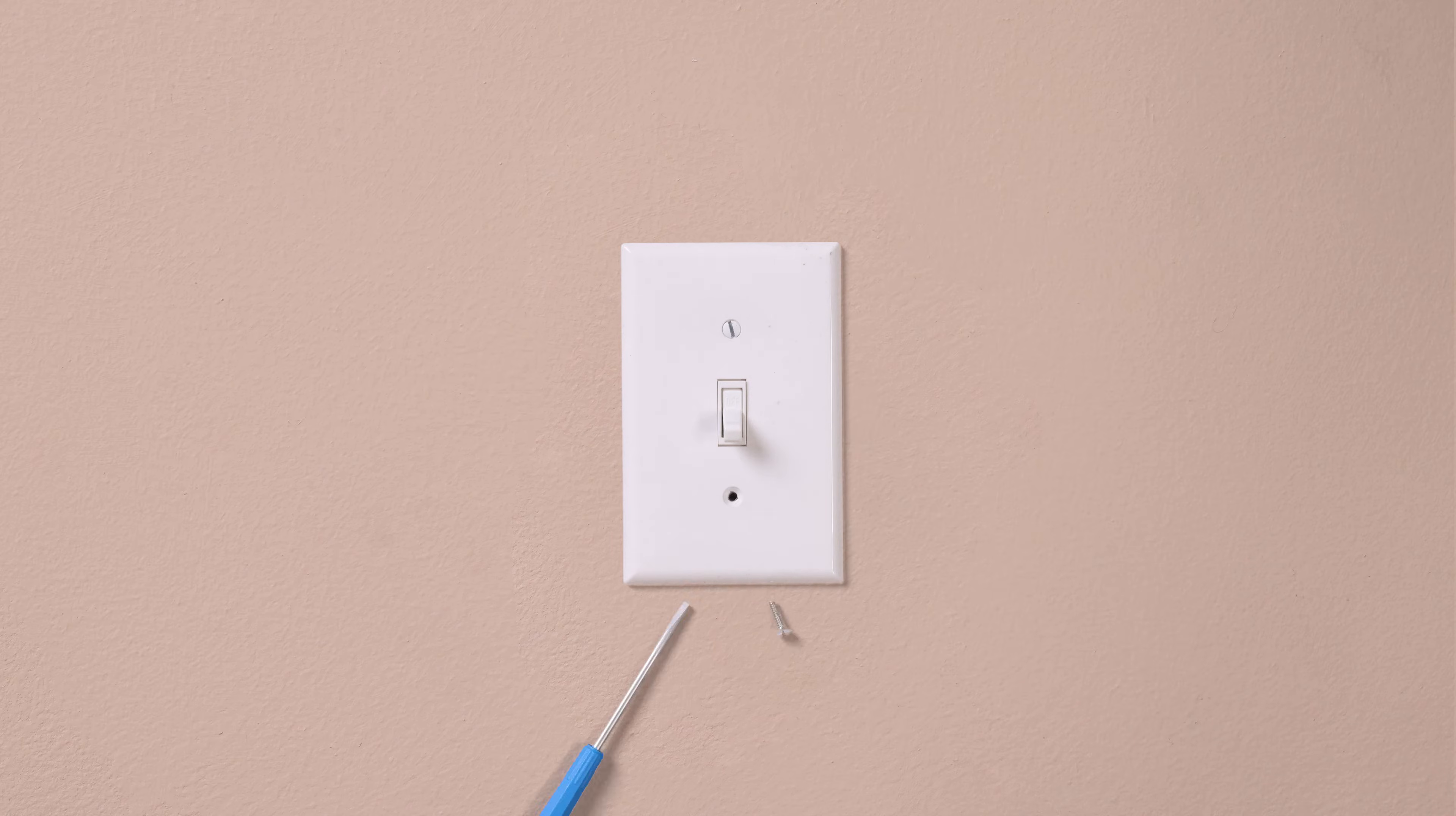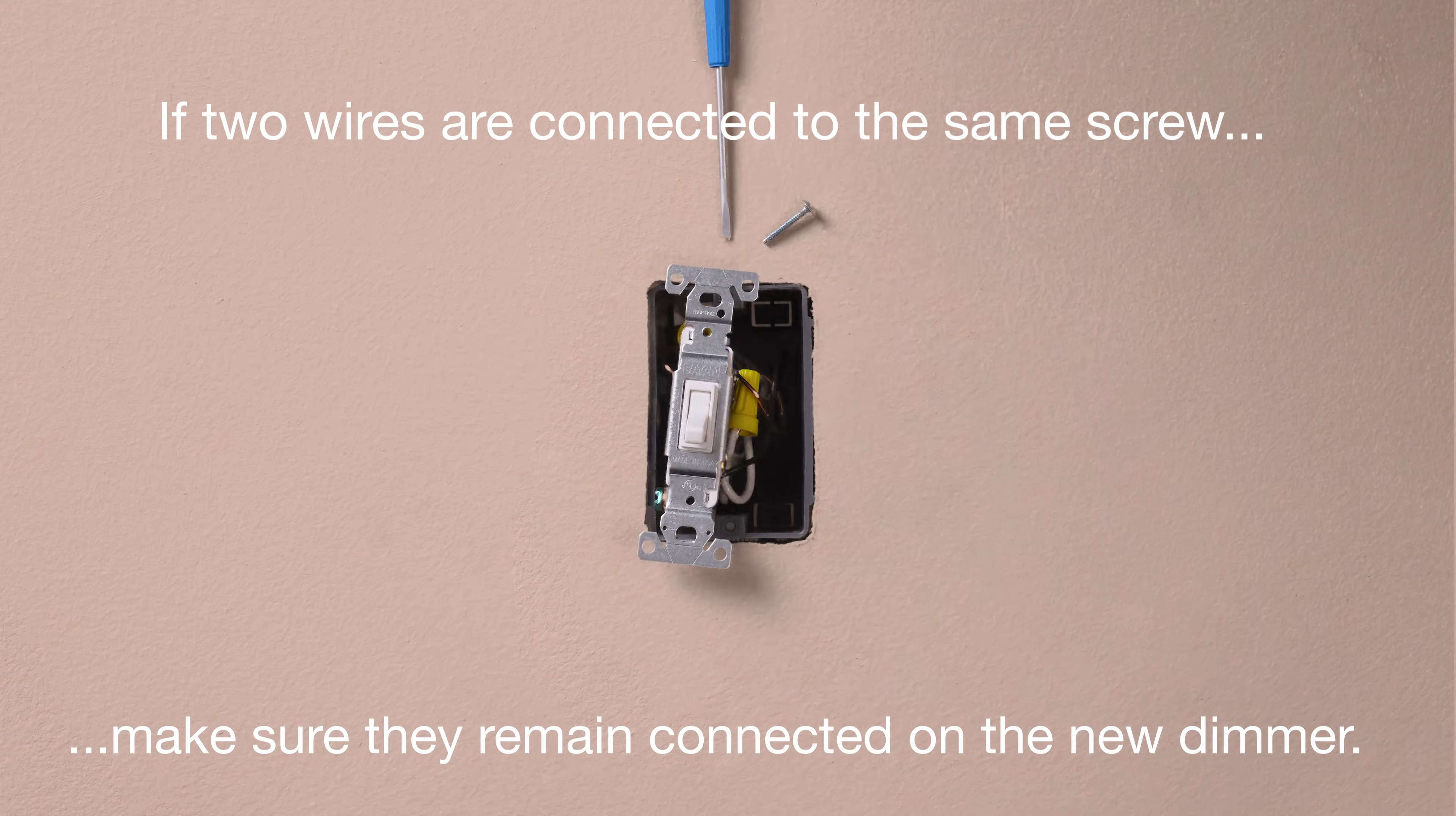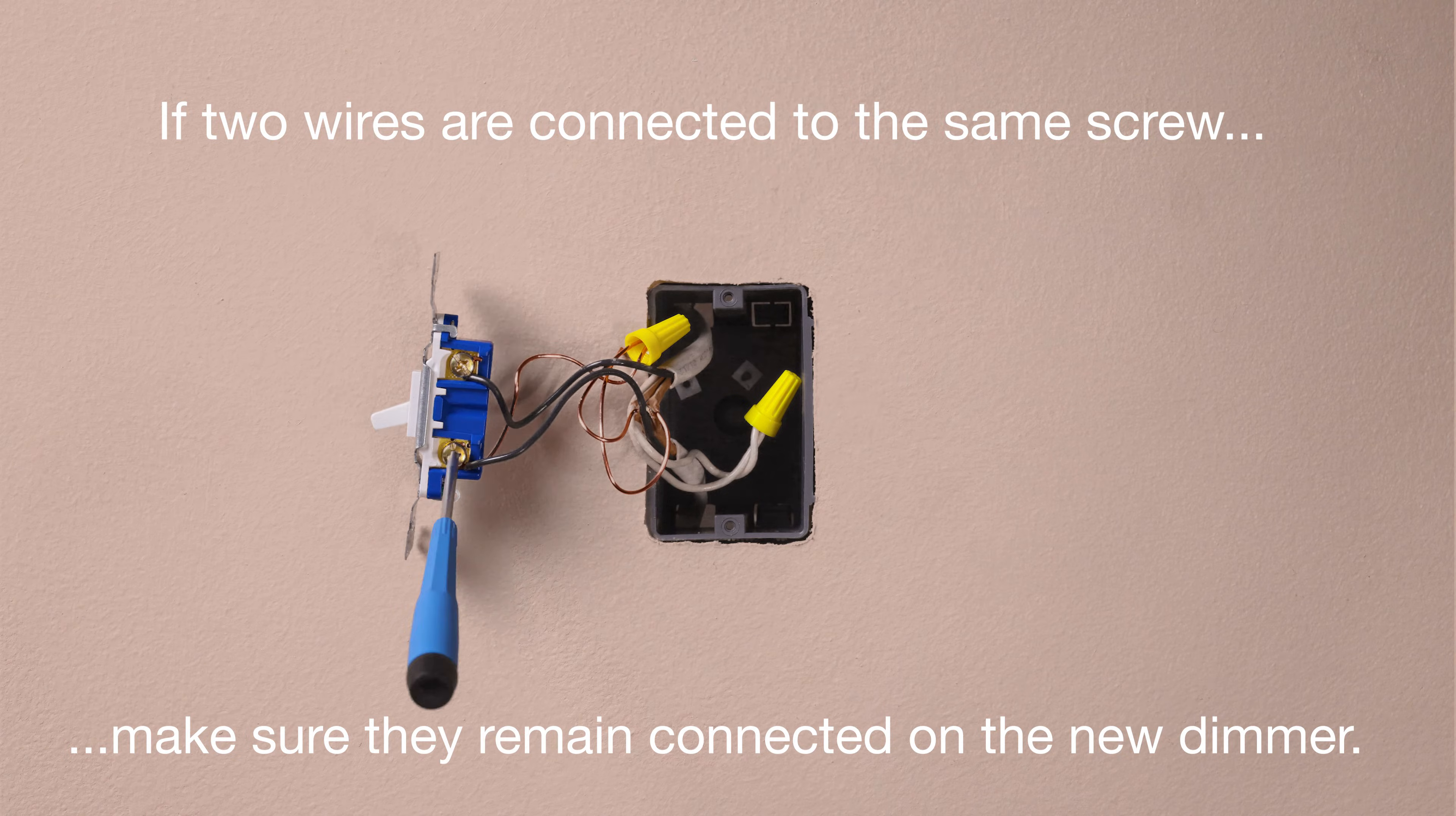First, remove your existing switch. If two wires are attached to the same screw, make sure they remain connected together on the new dimmer.